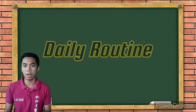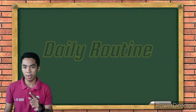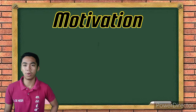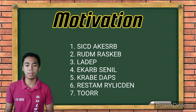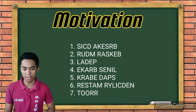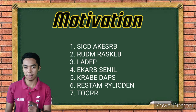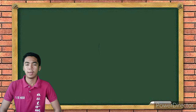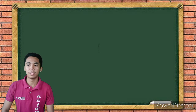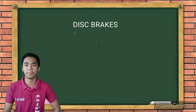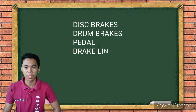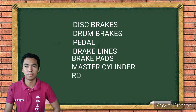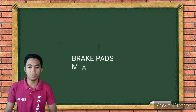Before we proceed to our main discussion, let's have our motivation for today. In two minutes, answer the following jumbled letters or words. Is there any question about the mechanics of the game? No sir. Let's begin. Timer starts now. Time is up. Who got the right answer? The answers for number one to four are disc brakes, drum brakes, pedal, and brake lines. Very good. The answers for number five to seven are brake pads, master cylinder, and rotor. Very good.